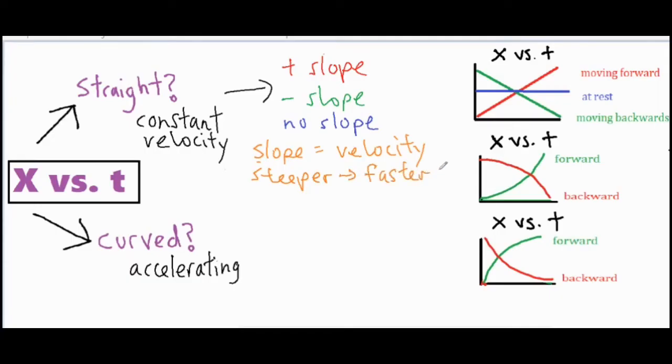If the slope is steeper, which means it's more upright, that means it's moving faster because that means its position is changing more quickly in somewhat of a shorter time. If it's a little bit more flat then it's moving a little bit slower. If it's more flat that means that there's a small change in position dragged over a longer period of time.